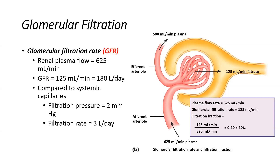Our glomerular filtration rate is basically how much plasma is filtered across the glomerular filtration membrane per minute. That is about 125 milliliters per minute, or 180 liters per day. We can also speak about our renal plasma flow, which is the total amount of blood coming into the kidneys — basically 625 milliliters per minute. Not all of that is filtered: 125 milliliters is filtered across the filtration membrane, and 500 milliliters exits the efferent arteriole.